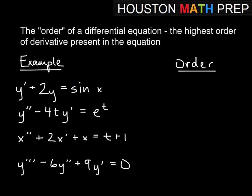For the next one, y double prime minus 4ty prime equals e to the t. Now, we have both y double prime and y prime, but the highest order of derivative present is 2, so this would be considered a second order differential equation.